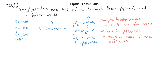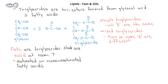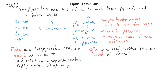If a triglyceride is solid or semi-solid at room temperature, it's known as a fat. These fats are often composed of saturated or monounsaturated fatty acids and will generally have high melting points. In contrast, triglycerides that are liquid at room temperature are known as oils. Oils are composed typically of mostly unsaturated fatty acids and will have relatively low melting points.